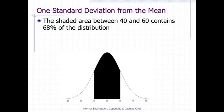The shaded area between 40 and 60 contains 68% of the distribution. The area within one standard deviation of the mean is 0.68.